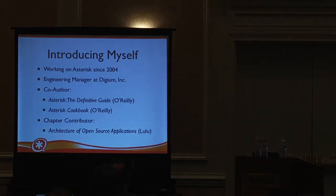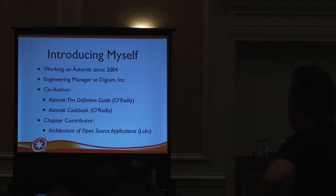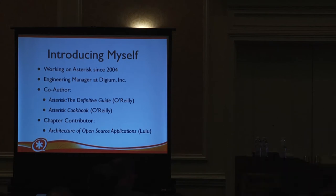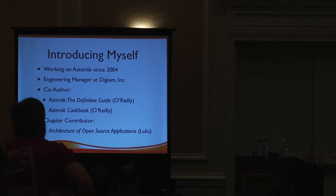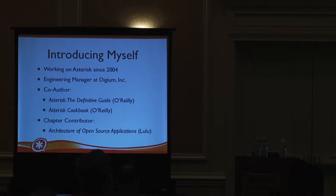I've been working on Asterisk since about 2004. In the last year I've been doing a lot of writing about Asterisk. There are a couple of O'Reilly books — Asterisk: the Definitive Guide and also a cookbook — and both of those are Creative Commons books you can get online. There's another book I wrote a chapter for called Architecture of Open Source Applications, which covers about 25 different open source projects. That one's also a Creative Commons book you can read for free.